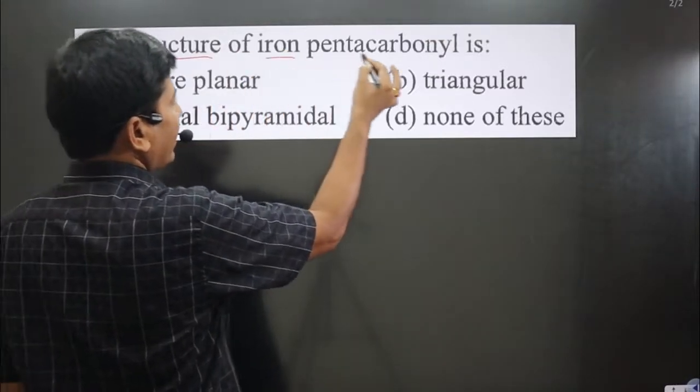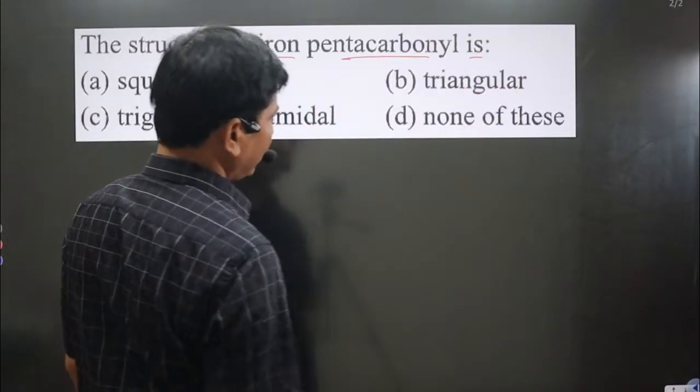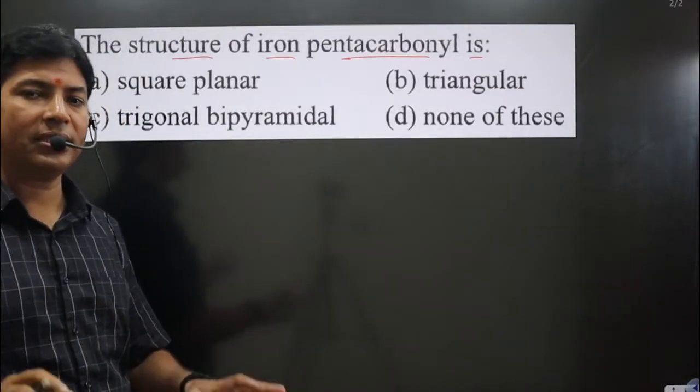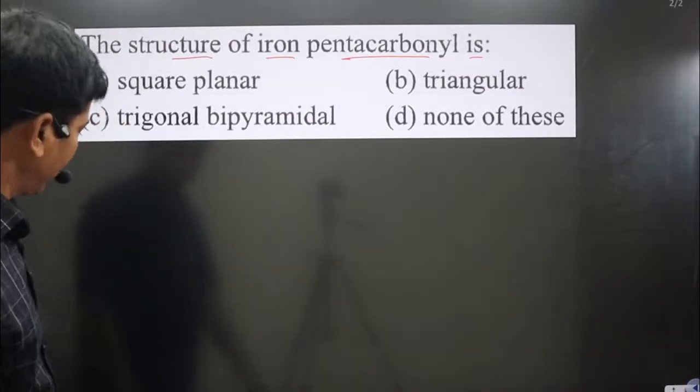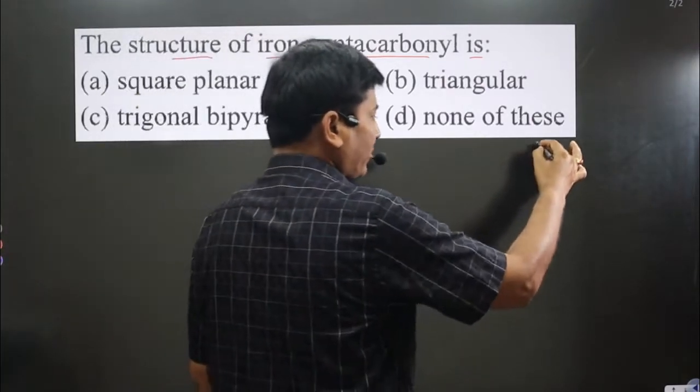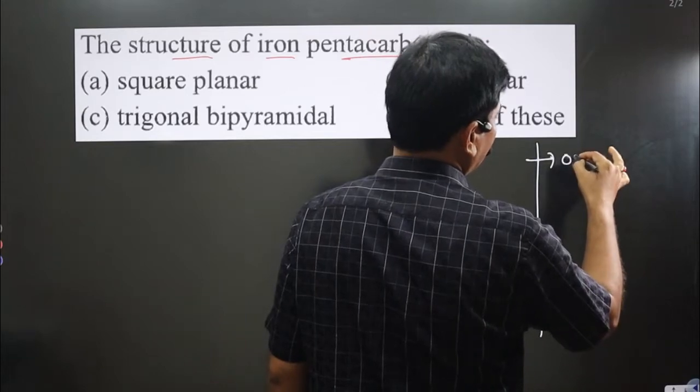The question asks about the structure of iron pentacarbonyl complex. Whenever the question is related to geometry or hybridization, always use valence bond theory. To apply valence bond theory, we follow specific steps.